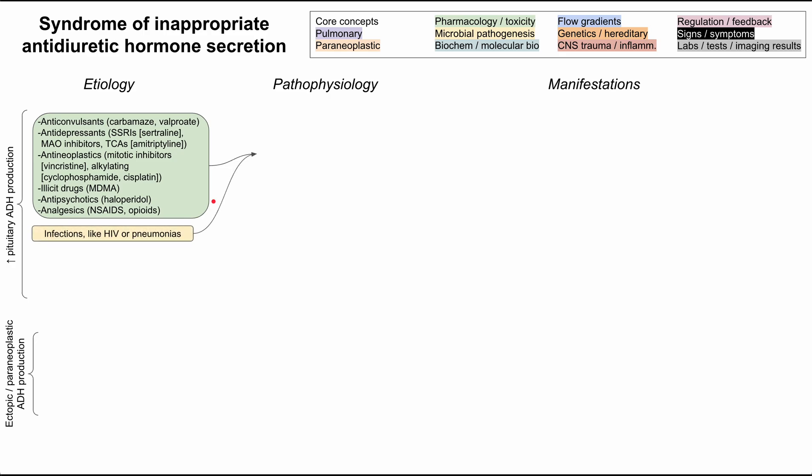Infections have also been known to increase pituitary ADH production, specifically pneumonias and HIV infection. COPD, or chronic obstructive pulmonary disease, has also been associated with SIADH. There are also CNS, or central nervous system, trauma and inflammatory etiologies, including strokes, hemorrhage, trauma, and iatrogenic causes like manipulation of the pituitary gland during neurosurgery — for example, a transsphenoidal approach.